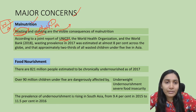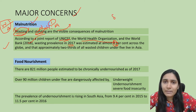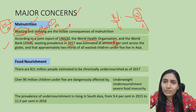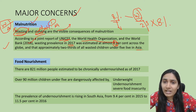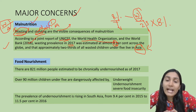According to a joint report of UNICEF, the World Health Organization, and the World Bank, wasting prevalence in 2017 was estimated at almost 8% across the world. Out of this 8% of children globally who have the problem of wasting — lesser weight as compared to age — two-thirds are from the Asia region, which includes India.